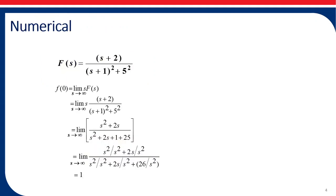Let us take an example. The function F(s) is equal to (s+2) divided by [(s+1)² + 5²], that is (s+1)² + 25. Let us find out the initial value first. We have to multiply this Laplace transform by s and then apply the limit as s tends to infinity — so s multiplied by F(s), which gives s·(s+2) divided by [(s+1)² + 25].